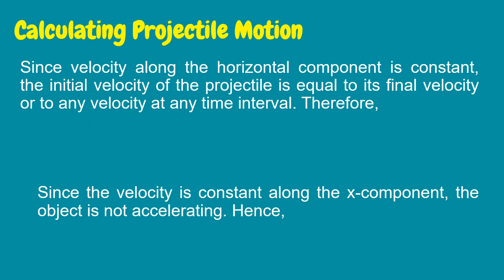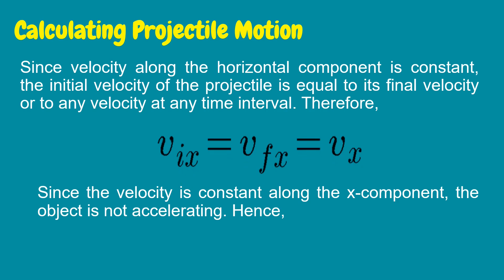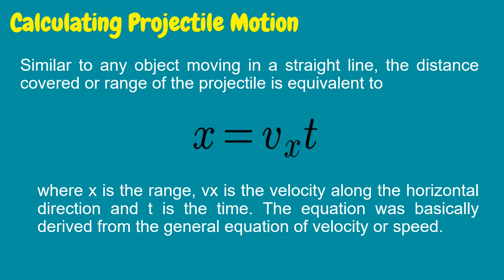Since velocity along the horizontal component is constant, the initial velocity of the projectile is equal to its final velocity, or to any velocity at any time interval. Therefore, initial velocity equals final velocity, or simply vx — the velocity along the horizontal. Since there is no change in velocity along the x-component, the object is not accelerating; hence, acceleration along the horizontal is equal to zero. The distance covered or range of the projectile is given by x = vx·t, where x is the range, vx is the velocity along the horizontal direction, and t is the time.